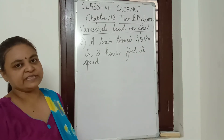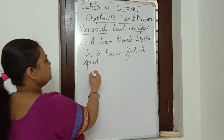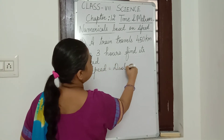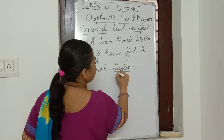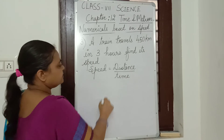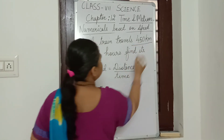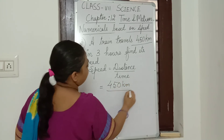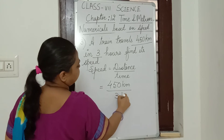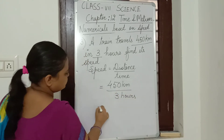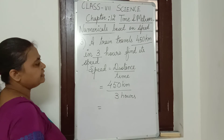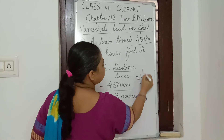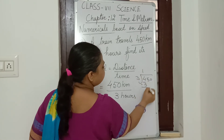This is one example based on that. So here again we will write: speed is equal to distance upon time. Distance is 450 kilometers upon time, which is 3 hours. So we do 450 divided by 3.